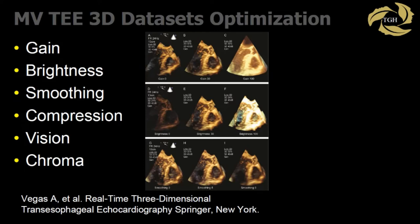What can you change on your data set? We've heard a bit about gain, brightness, smoothing, compression, vision, and chroma. These are the buttons you need to learn on your machine. Buttons are made to be pushed. When you get to your machine, understand your knobology and use it in a stressless setting. Take a 3D data set of the mitral valve on someone who has a normal mitral valve and play with that data set — see what you can do with it. No one's going to ask you where's the prolapse if the patient doesn't have prolapse. That's how you learn.